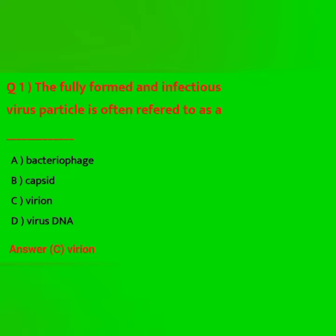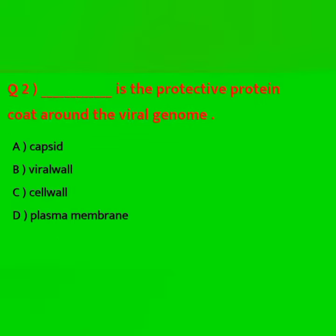Dash is the protective protein coat around the viral genome. Options: Capsid, Viral wall, Cell wall, Plasma membrane. Answer: Capsid.